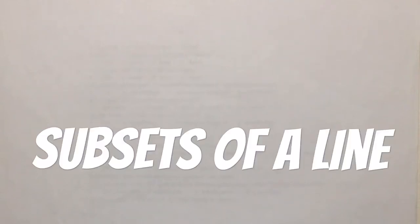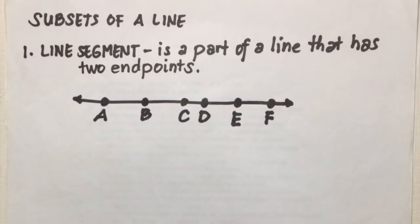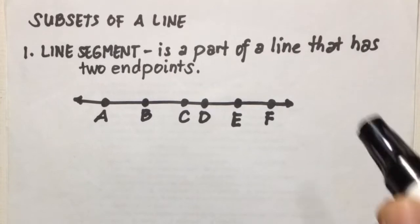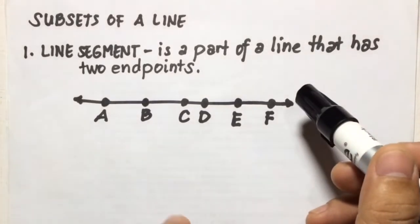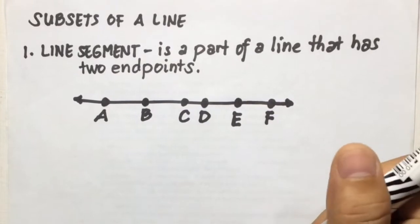Hi guys, in this video I'm going to discuss the subsets of a line. The first subset of a line is the line segment. A line segment is a part of a line that has two endpoints, and we can name a line segment using those two endpoints.